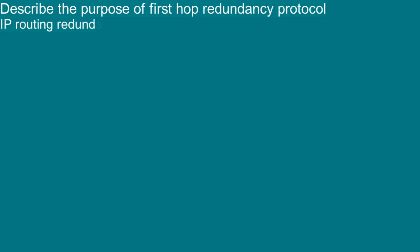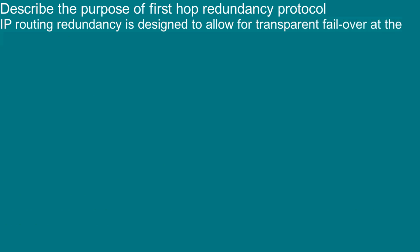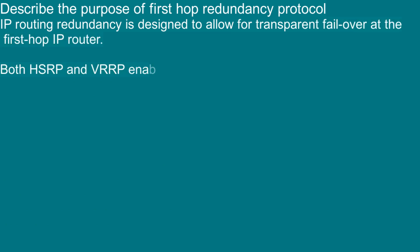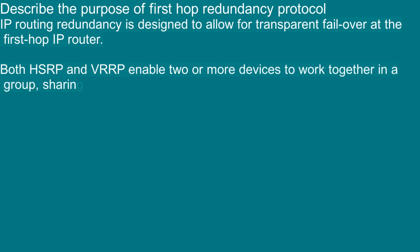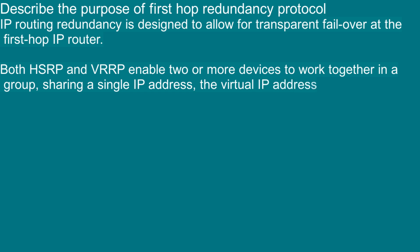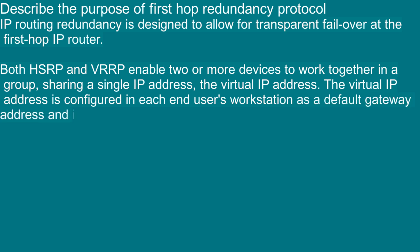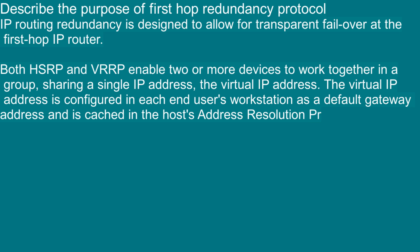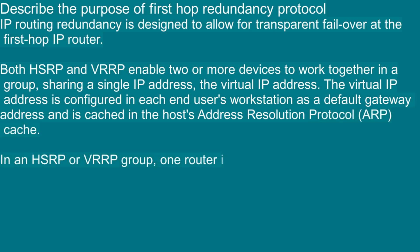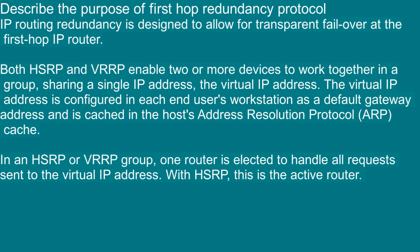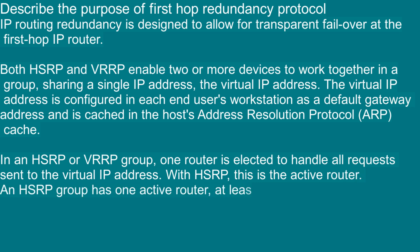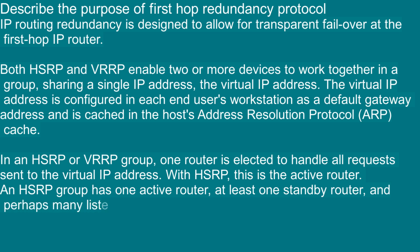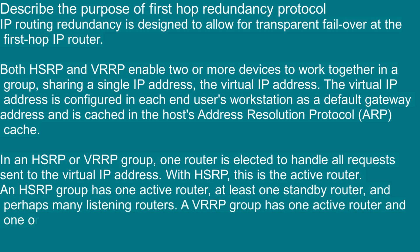3.5 Describe the purpose of first hop redundancy protocol. IP routing redundancy is designed to allow for transparent failover at the first hop IP router. Both HSRP and VRRP enable two or more devices to work together in a group, sharing a single virtual IP address. The virtual IP address is configured in each end-user's workstation as a default gateway address and is cached in the host's ARP table. In an HSRP or VRRP group, one router is elected to handle all requests sent to the virtual IP address — with HSRP, this is the active router. An HSRP group has one active router, at least one standby router, and perhaps many listening routers. A VRRP group has one active router and one or more backup routers.